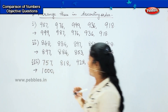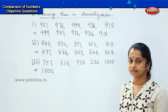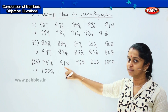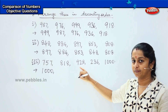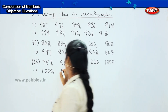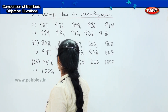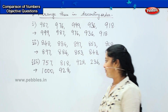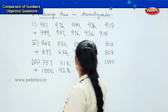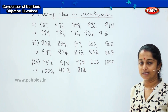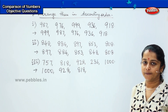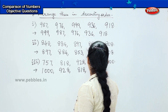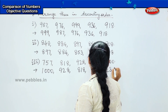After 1000 what will come? Is it 757? No. Is it 818? No. Is it 928? Yes. So the second number is 928. What is the third one? It is 818. Then what is the next number which is lesser than 818? It is 757, and my last number is 236.